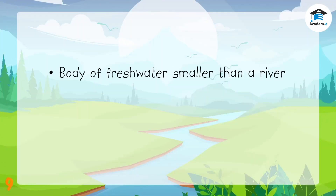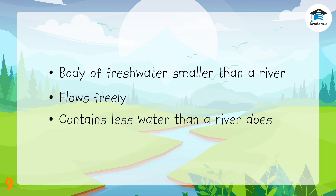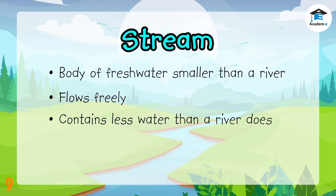This body of freshwater is smaller than a river. It also flows freely but contains less water than a river does. What waterform is this? Right, it is a stream.